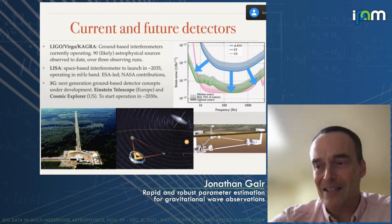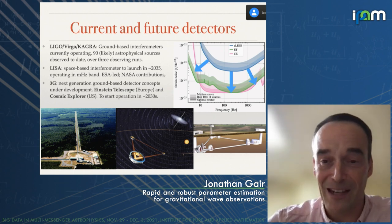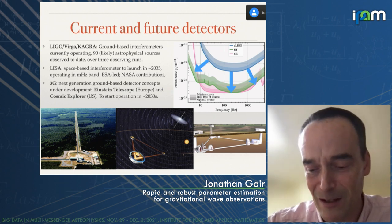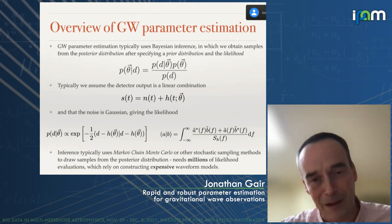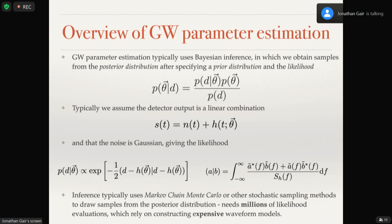All of these gravitational wave detectors produce data containing sources, and when we detect sources we need to infer their parameters. The paradigm used for parameter estimation across all types of gravitational wave detector is a Bayesian one. In Bayesian inference we use observed data to update our prior information about the properties of a particular system, characterized by a distribution P(θ), into a posterior distribution. The updating is done using the likelihood — the probability of seeing the data given some particular parameter values.